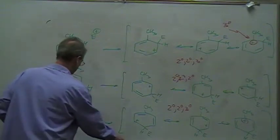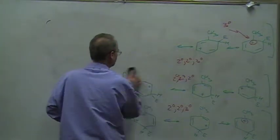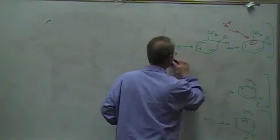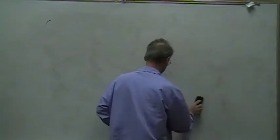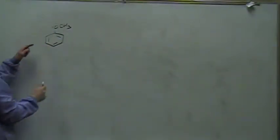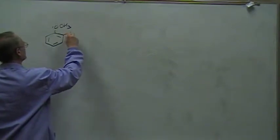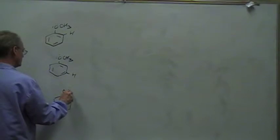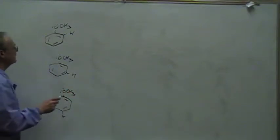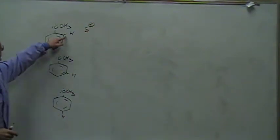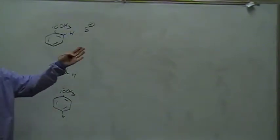Let's move on to another example: one of the highly activating groups. Let's look at a methoxy group, or anything with at least one lone pair on the atom next to the benzene ring. As we've seen, those are always ortho-para directing groups as well. Let's see if we can figure out why. In each case we look at ortho, meta, and para attack, bringing in an electrophile each time, and draw a set of three resonance structures for each.